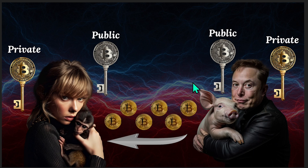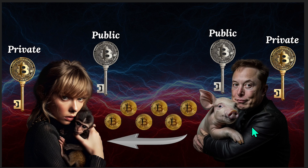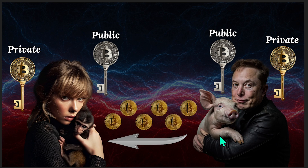Elon Musk had thoughts of his ex and he just couldn't get over it, so he actually spent days and nights listening to Taylor Swift's music, and it helped him get over his ex. As a thank you, he wanted to send her five Bitcoin. Now Elon Musk uses a crypto wallet called the pig wallet, and Taylor Swift is going to be using a crypto wallet which we'll affectionately refer to as the monkey wallet.